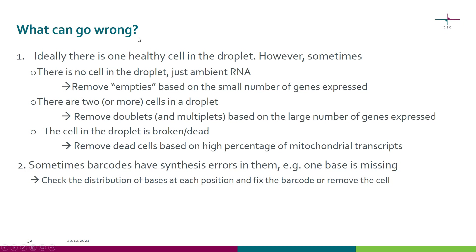So what can go wrong? Sometimes there is no cell in the droplet, but there can still be ambient RNA floating around, so we get some reads. However, those reads will match only a small number of genes, and we can detect empties based on that. A simple way to detect doublets and multiplets is also using the number of genes expressed — typically if there are more cells in a droplet, this number is larger. A cell may also be broken or dead, in which case we typically get a high percentage of reads mapping to mitochondrial genes, which can be used to detect and remove those dead cells. In drop-seq there can also be problems in barcode synthesis, such as a missing base, and these can also be dealt with.